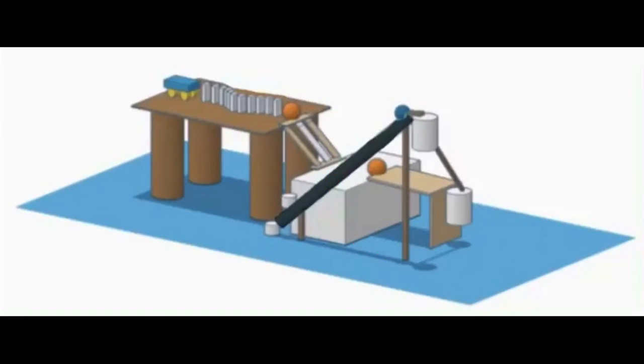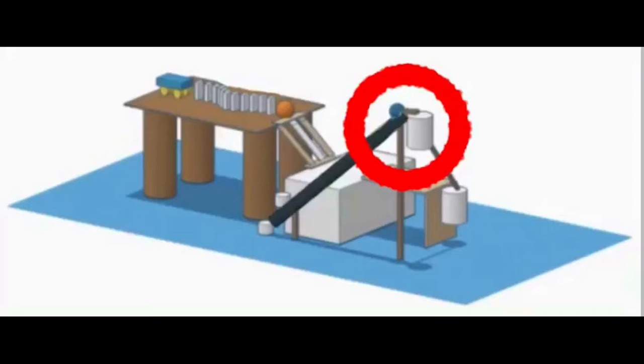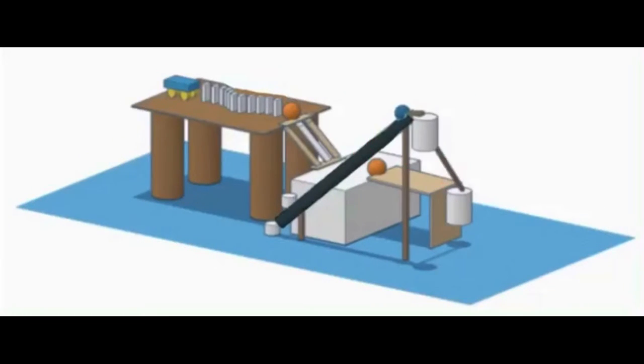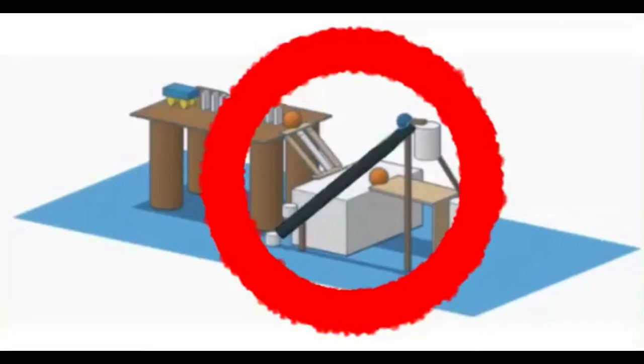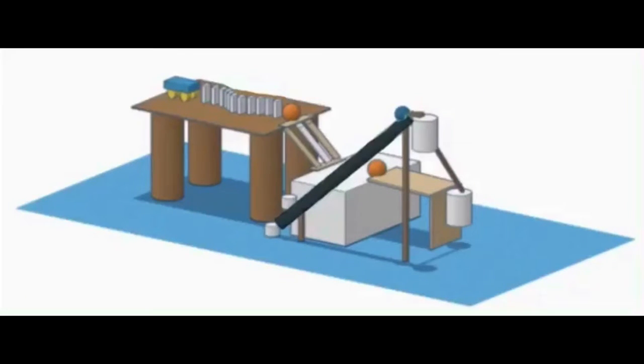Step seven is when the pulley shakes. There is a ball at the top of a cut pool noodle that gets knocked down when the pulley shakes. This step uses the first and second laws of motion. Step eight is when the ball gets knocked down by the pulley and goes down the pool noodle, then the ball hits a cup filled with Kool-Aid sugar into a cup of water. This uses the first, second, and third laws of motion.